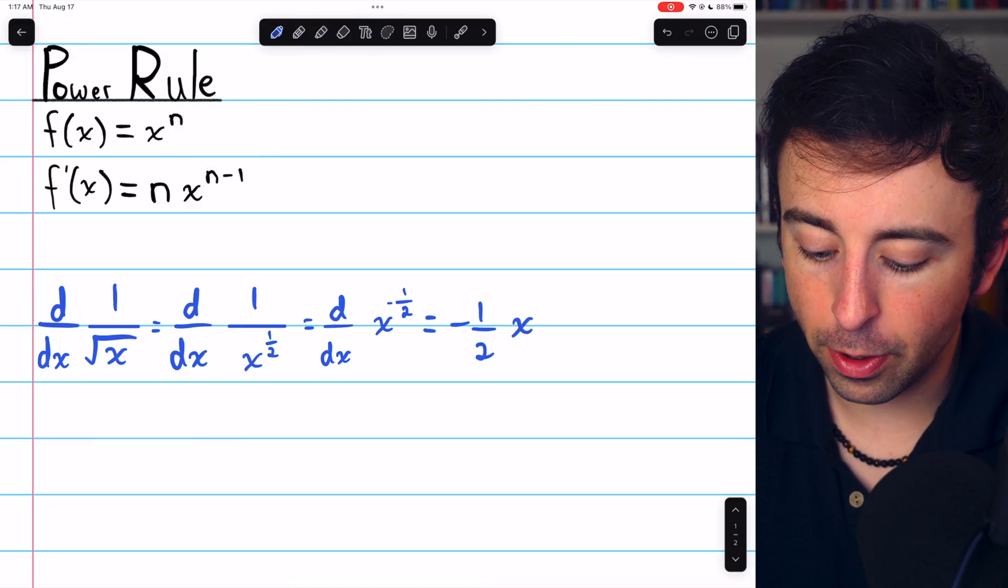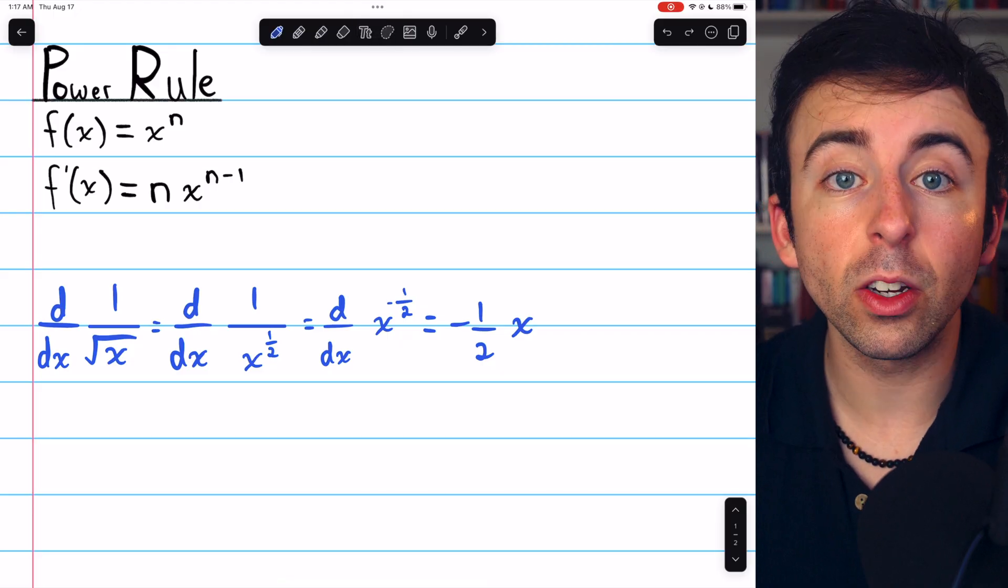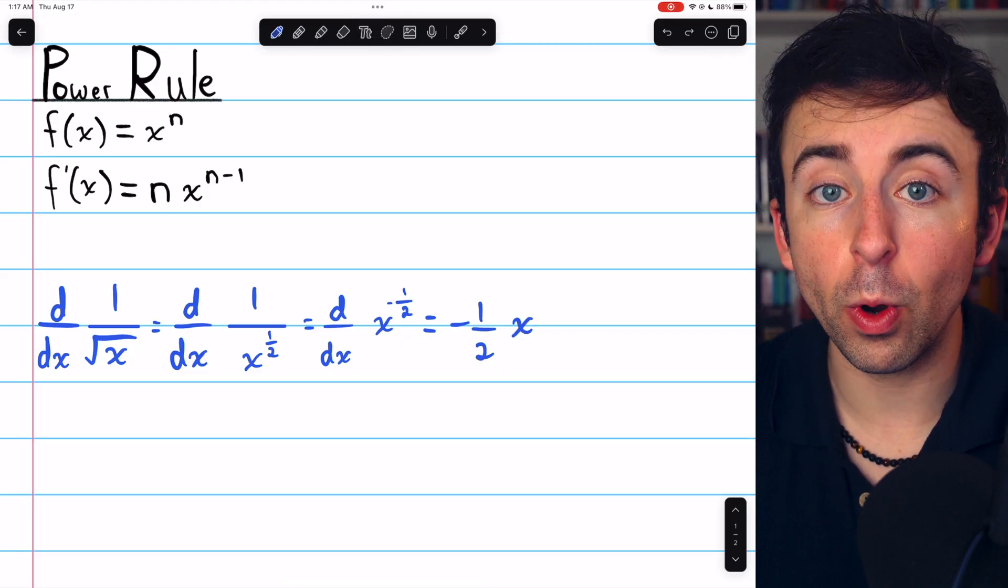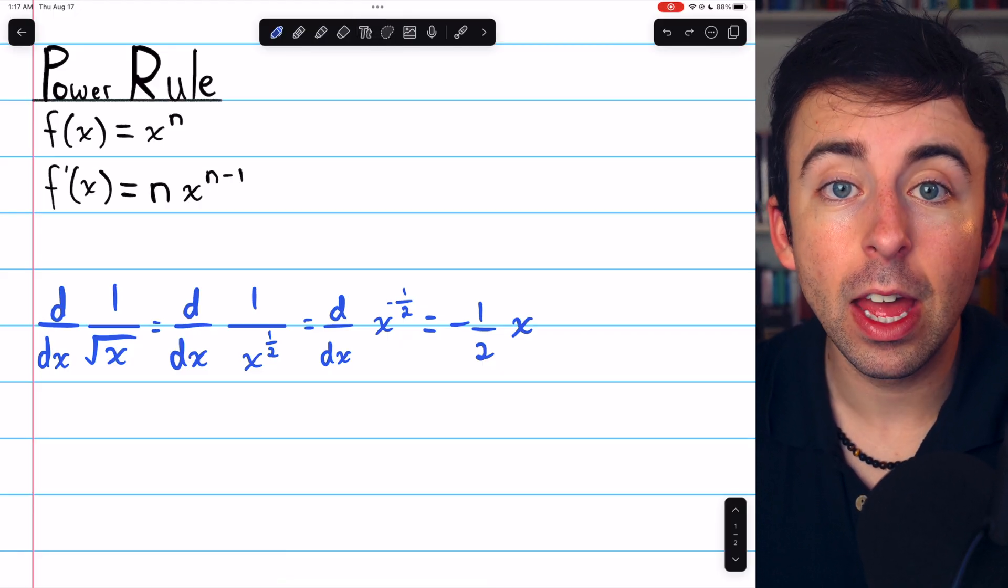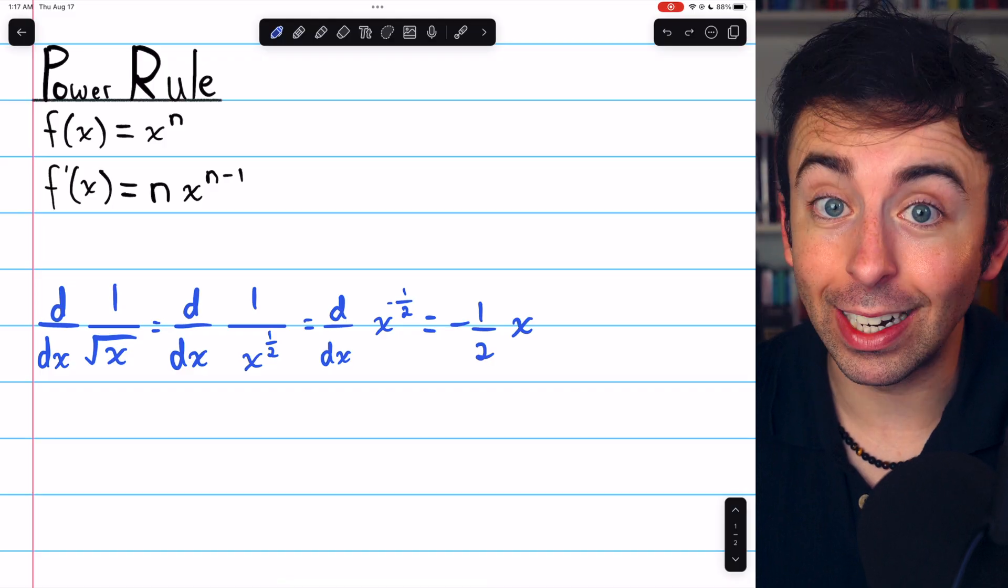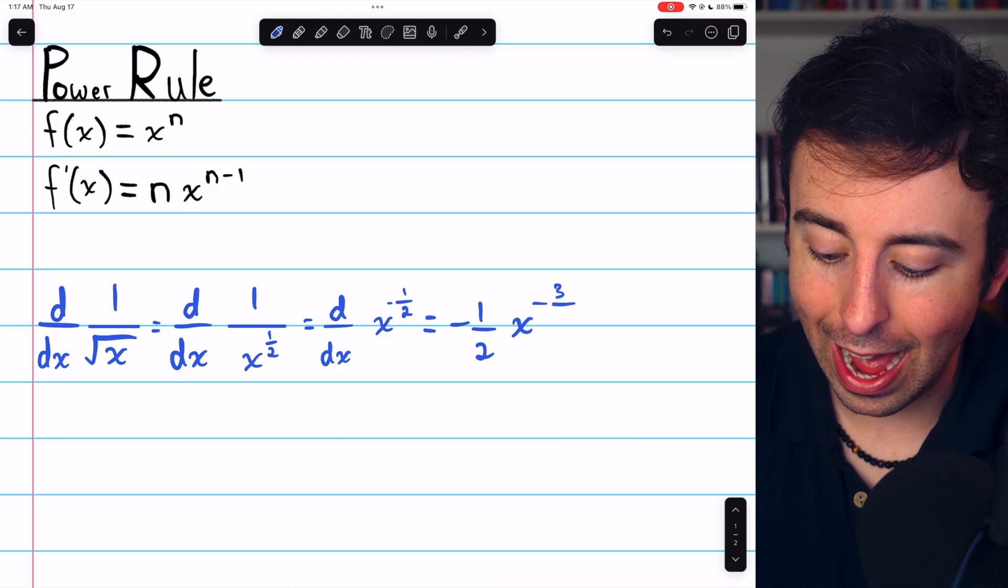The current power is negative 1 half. We have to subtract 1 from that, or subtract 2 halves. Minus 1 half minus 2 halves is minus 3 halves.